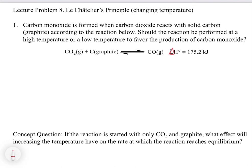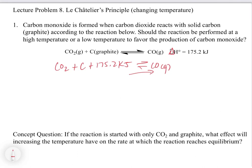In this example, carbon monoxide is formed when carbon dioxide reacts with solid carbon graphite, with ΔH = +175.2 kilojoules. Rewriting the equation: CO₂ plus carbon plus 175.2 kilojoules is in equilibrium with CO gas. The endothermic side is the forward direction, so if we want to favor the production of carbon monoxide, we should increase the temperature. Increasing temperature will increase the rate of the endothermic forward direction, producing more CO — this shifts right.